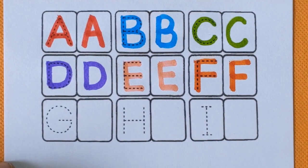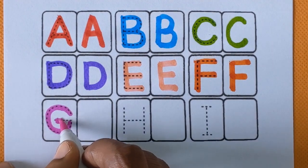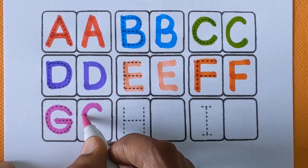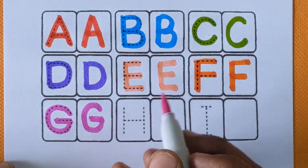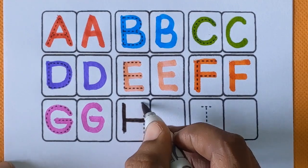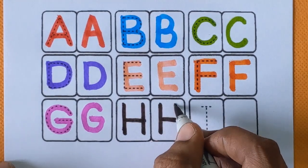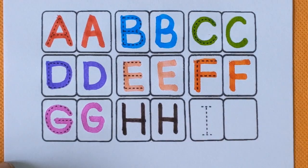After F, next is alphabet G, G for gate and G for god, purple color. H, H for hunter and H for house, brown color.